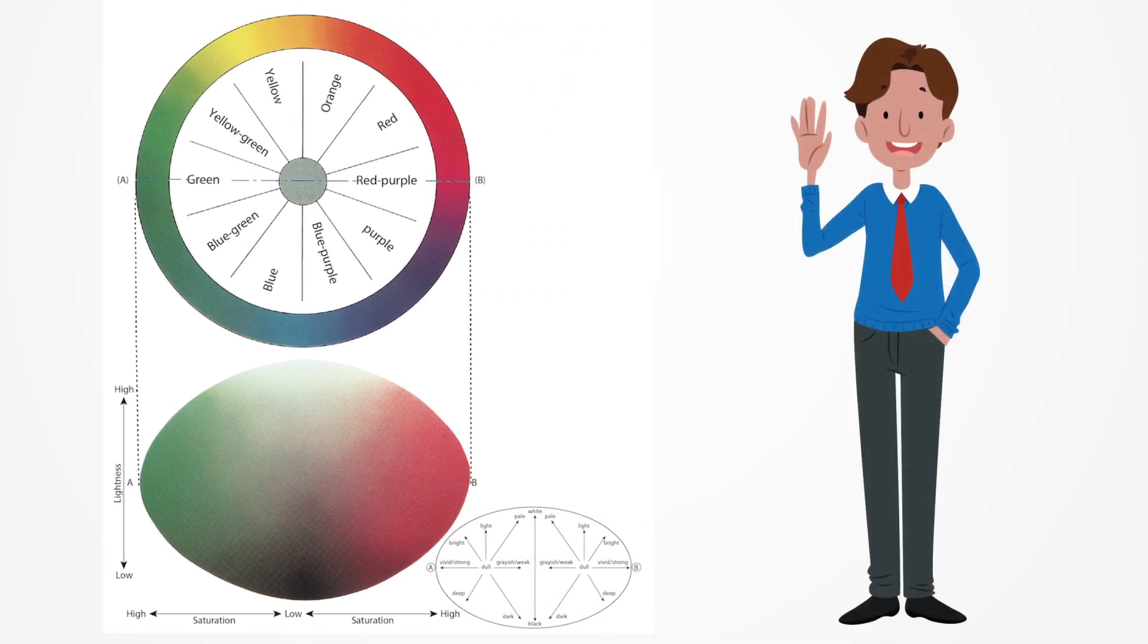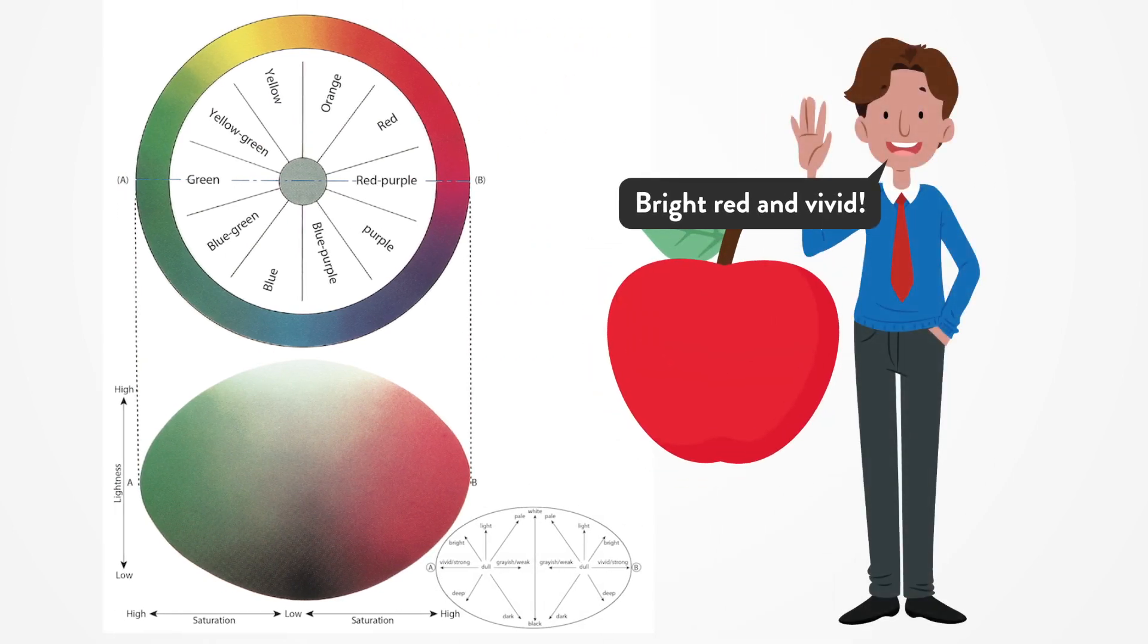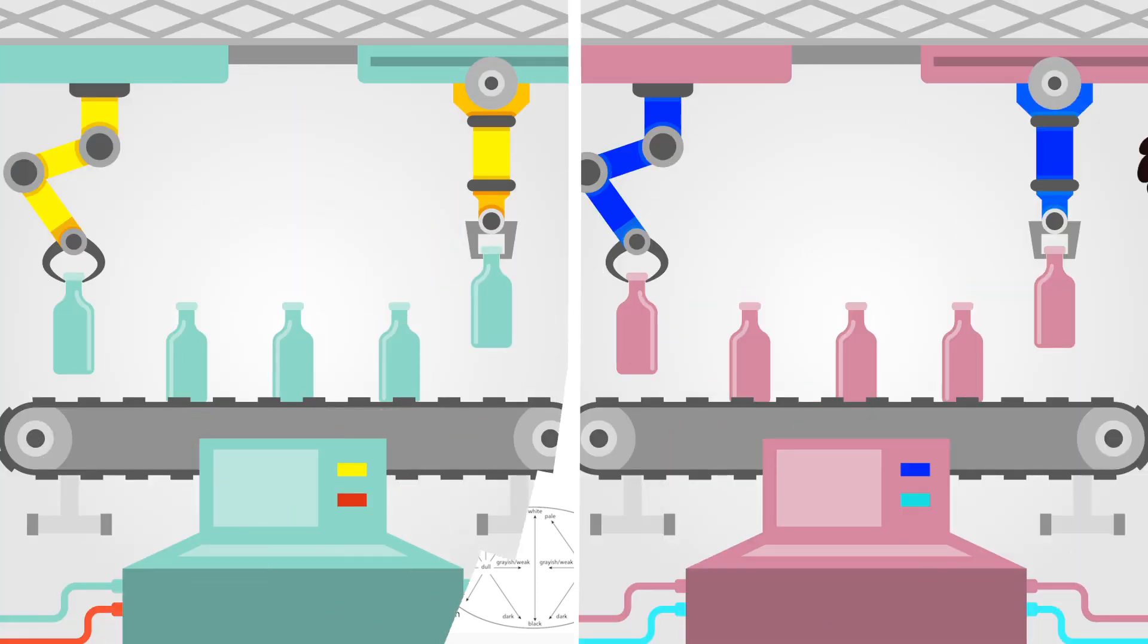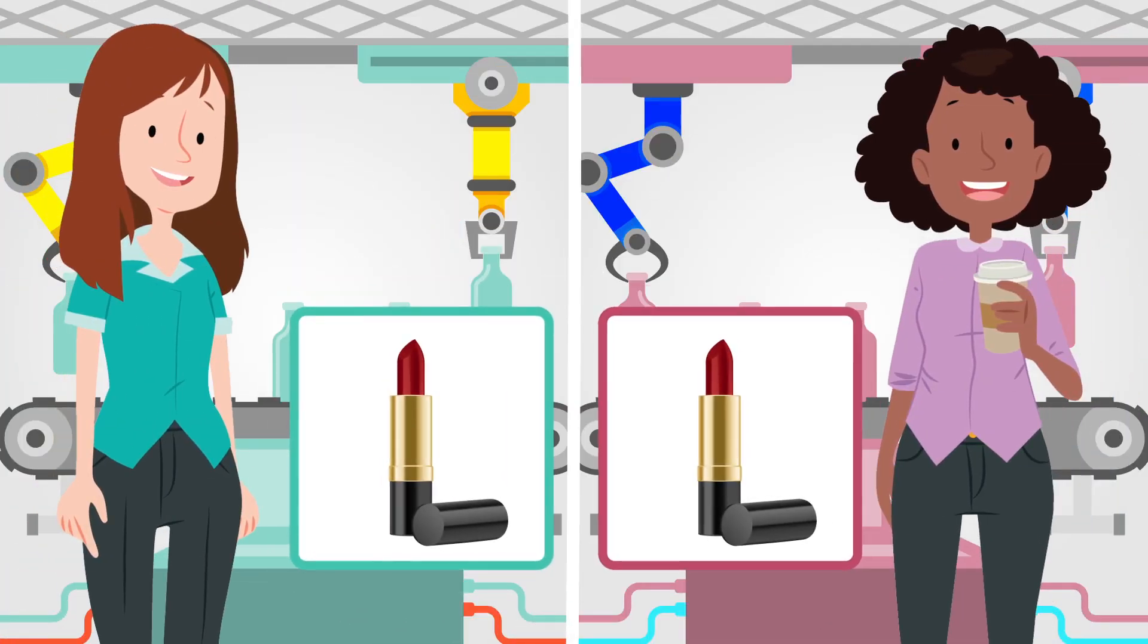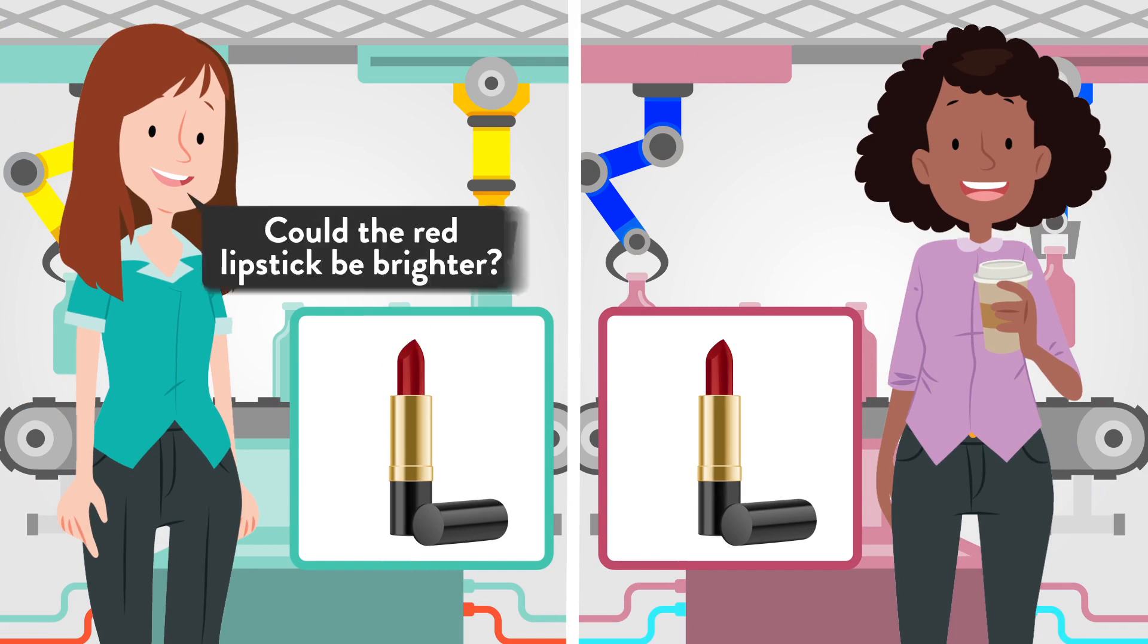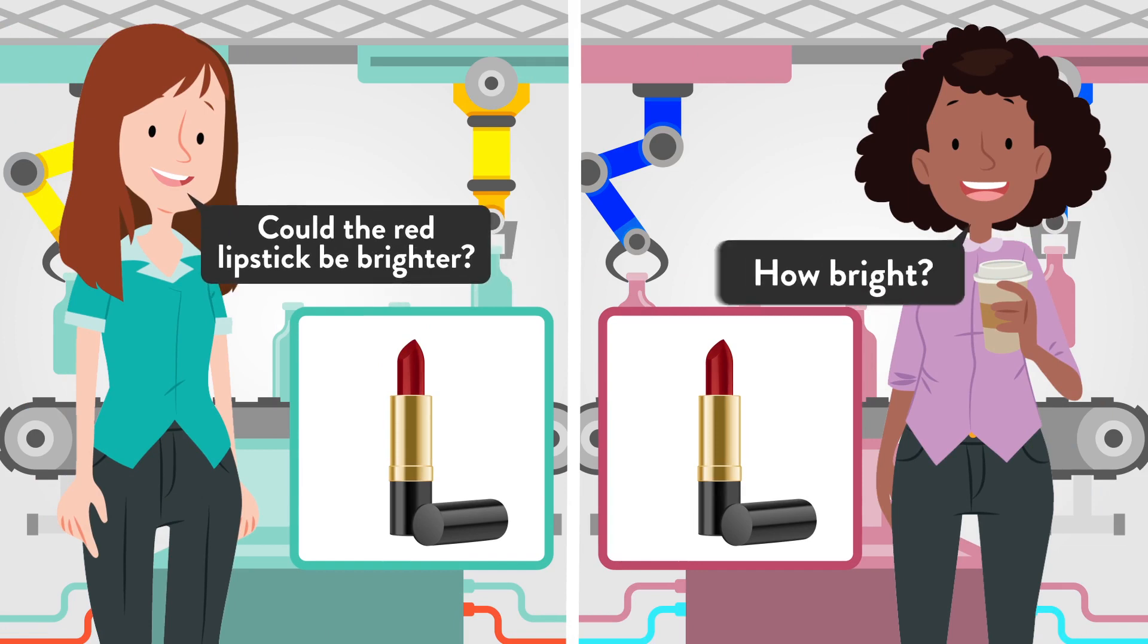With these three attributes, an apple can be described as bright, red, and vivid. But verbal color expression is still too general for precise color communication. If someone asks for brighter red, how much brighter should it be?